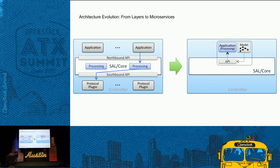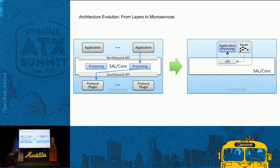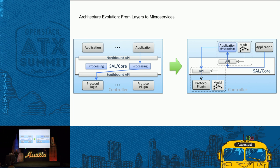What we ended up realizing was that it didn't really matter if it was a protocol or a service — these are all services to one another. You have things that are producers and things that are consumers. So we decided to create a model-driven architecture using the modeling language Yang. We actually have a Yang model that will generate APIs for your services or protocols, providing the interface for any other service or protocol to interact with yours. It doesn't matter if you're a protocol, an application, or a service — you end up talking through the API generated through a set of Yang tools, making sure everything is done properly and consistently throughout the entire system.